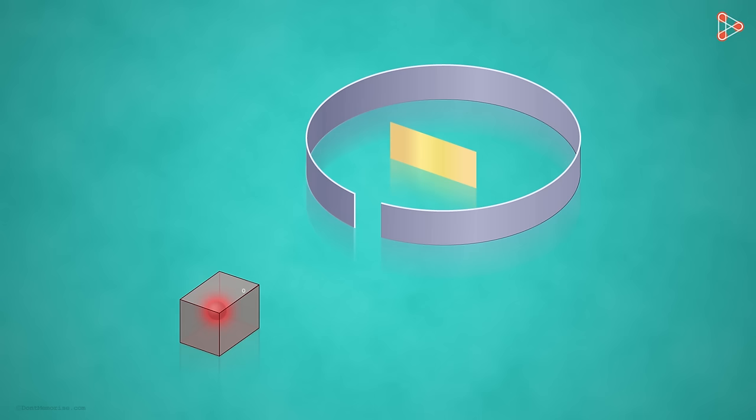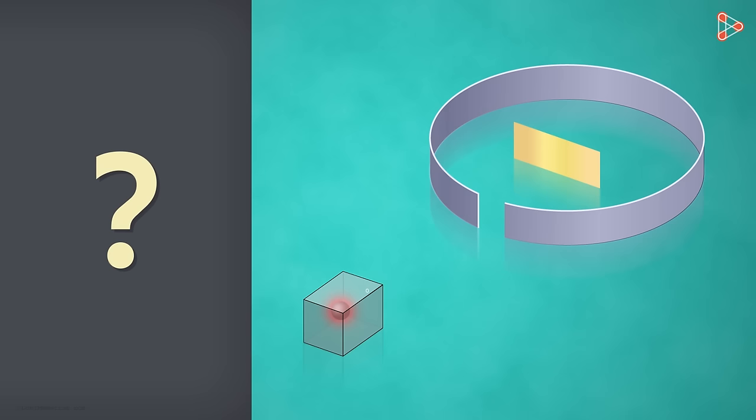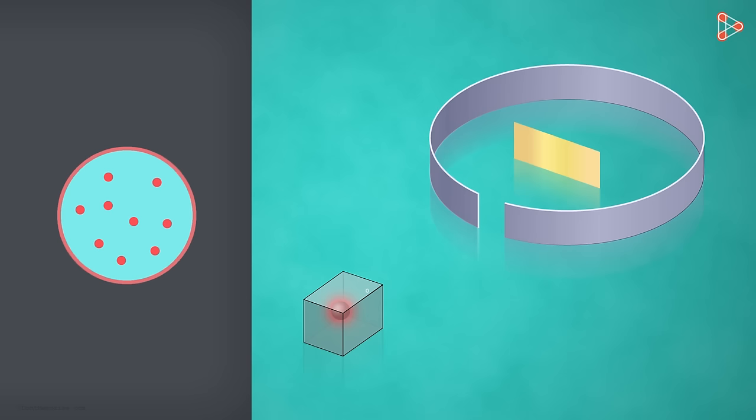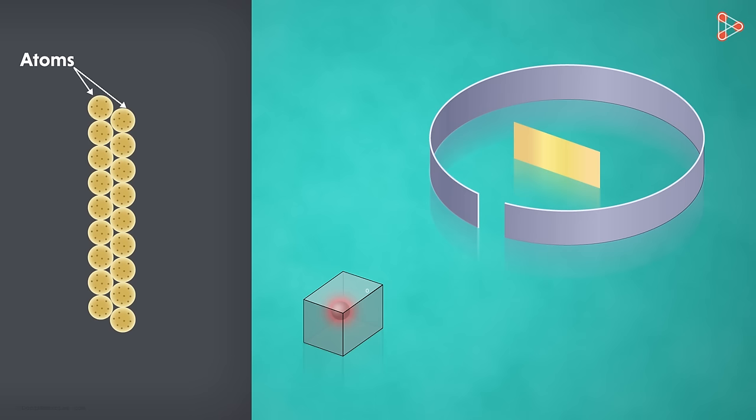The alpha particles were emitted from the element present in this box. These directly hit the gold foil. Now, what should happen ideally? As we know, Thomson's model suggested that an atom is a sphere of positive charge with negative electrons embedded inside it.